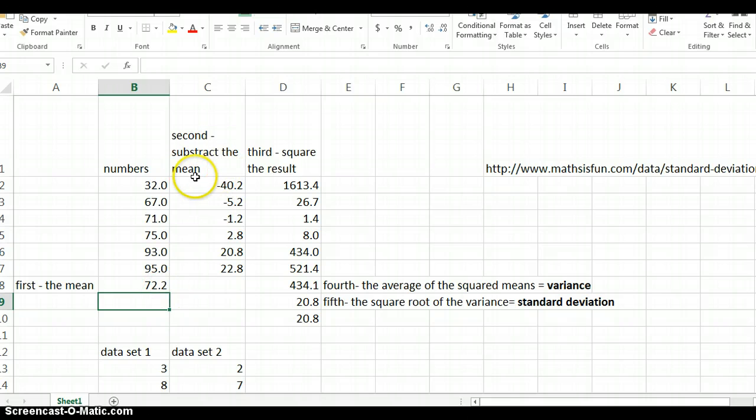The second step is to subtract the mean from that value. So to do this I'll select 32 minus the mean. Now I need to do one more step. As I drag my equation through these rows I don't want B8 to change. I want B2 to become B3, B4, etc. But I want B8, that mean, to stay the same. So I'm going to put a dollar sign in there. Okay, now if I click and hold I can drag that equation right through all of the rows.